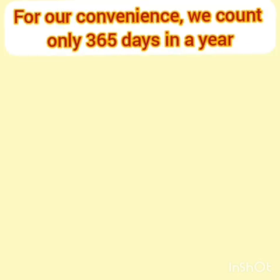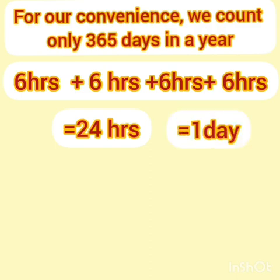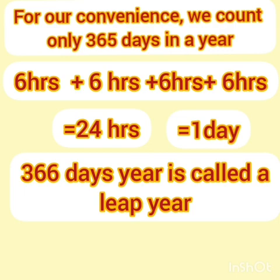For our convenience we count only 365 days in a year. The balance of about 6 hours each year accumulates — 6 hours from year 1, year 2, year 3, and year 4 — adding up to 24 hours, which means 1 day. This additional day is added to February, giving it 29 days. That year has 366 days and is called a leap year, and that extra day in February is called a leap day.